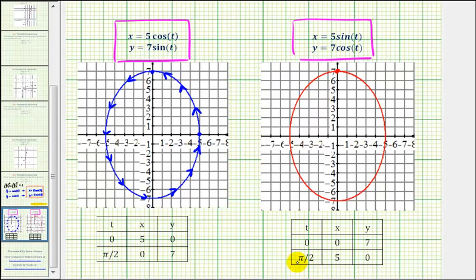And then as t increases to pi over 2, we'd be at the point 5, 0, or this point here. So these parametric equations would trace the ellipse clockwise.